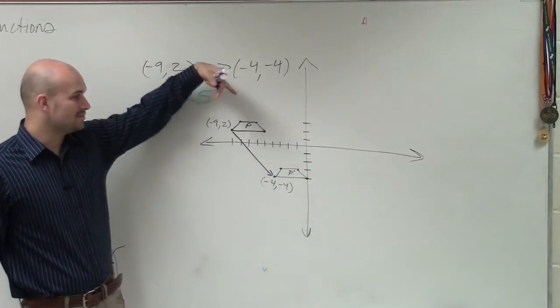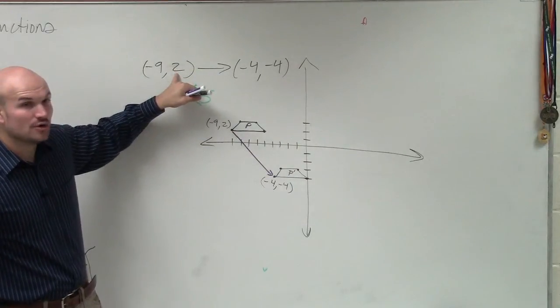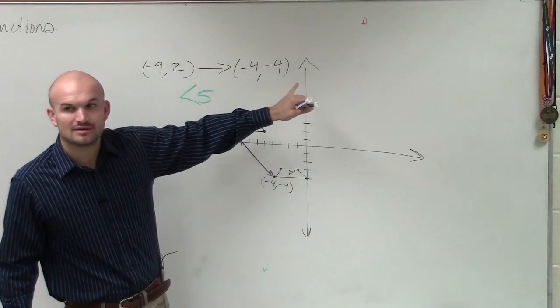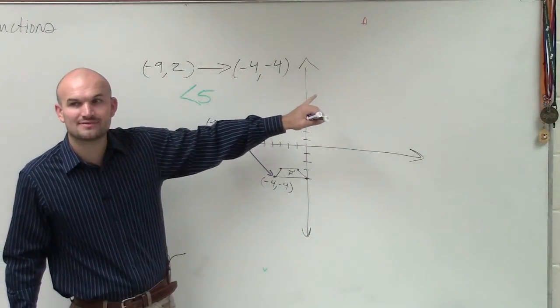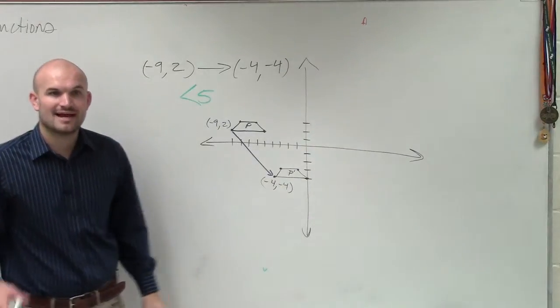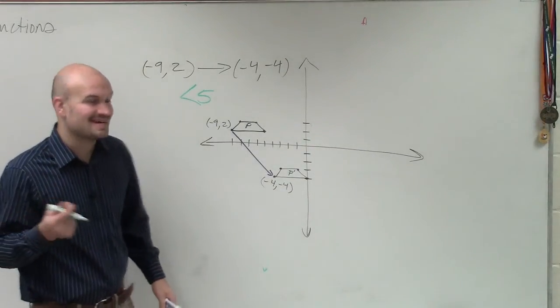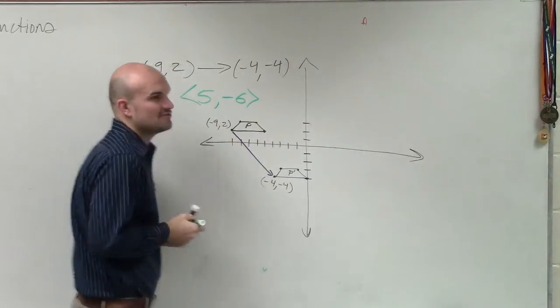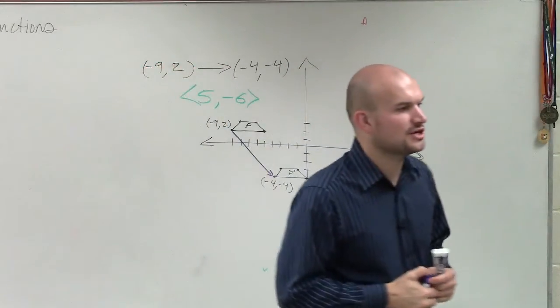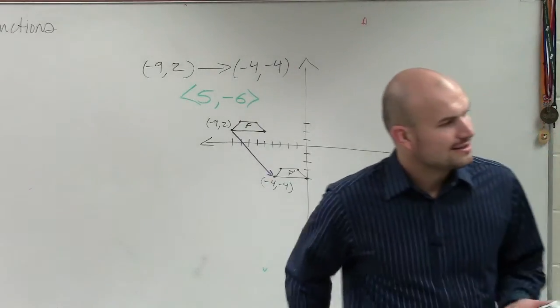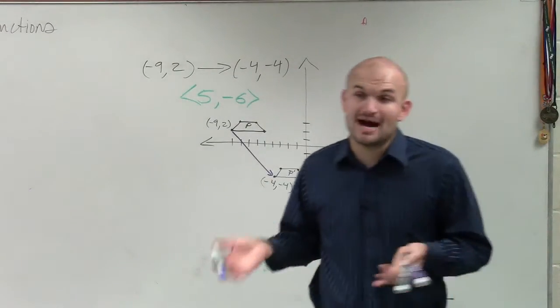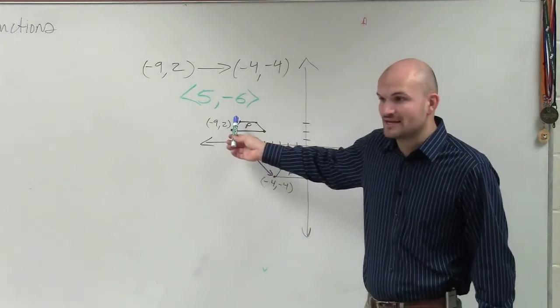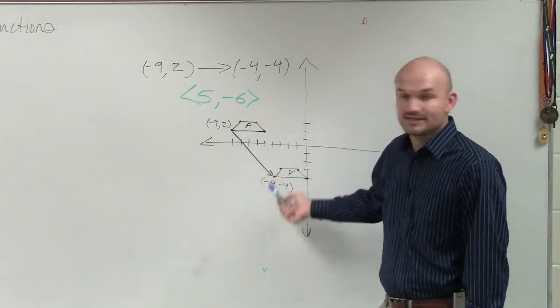And then I had to go down, right? So 2 plus what gives you negative 4? Negative 6. Because remember, ladies and gentlemen, what we do is on our transformation vectors is we add, remember, we add the vectors. If they're positive or negative, we add the vectors to our original vector, our original point, to get the new point.